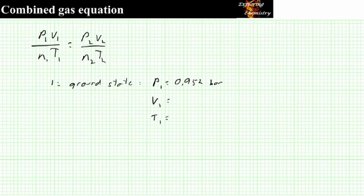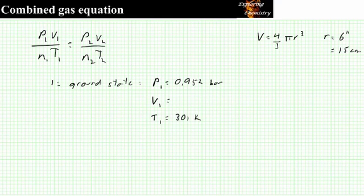So to calculate the volume, the equation of a sphere is V equals 4 over 3 pi r cubed. We're told that the radius is equal to 6 inches, which is 15 centimeters. You would be given the conversion from inches to centimeters. And so when we substitute that in, we find out that the initial volume is 14.1 liters.